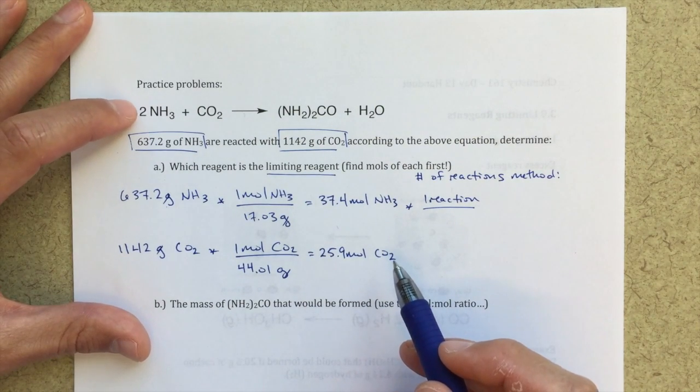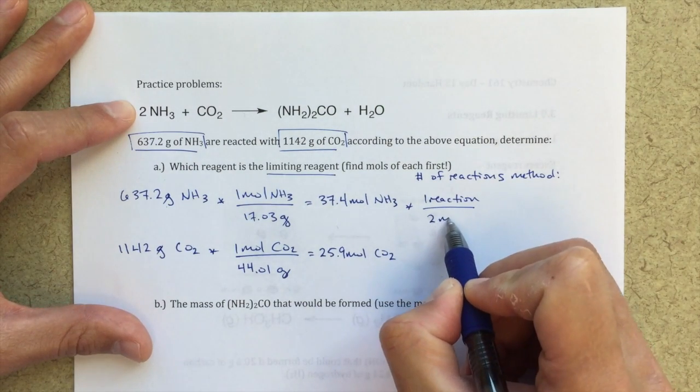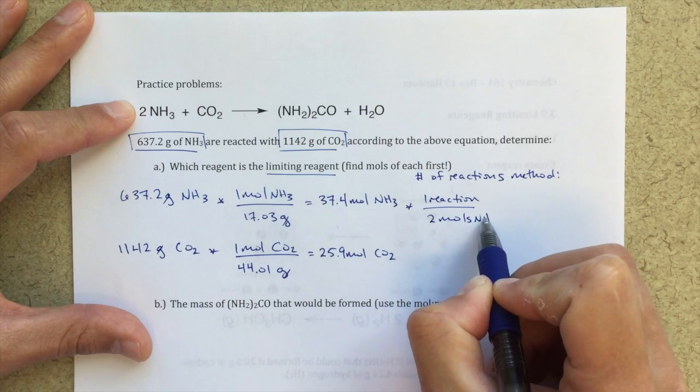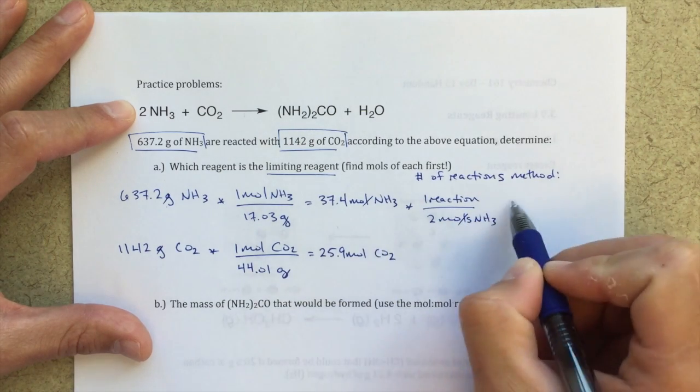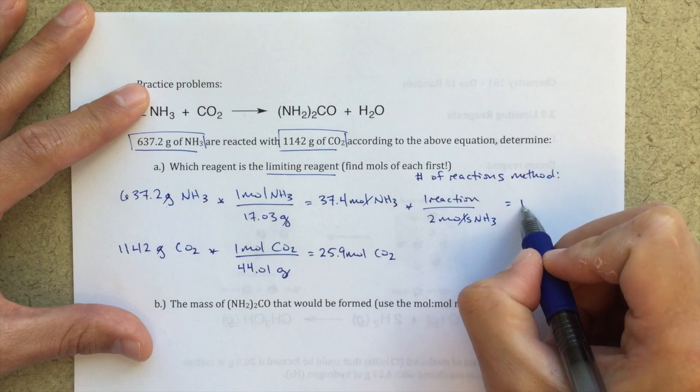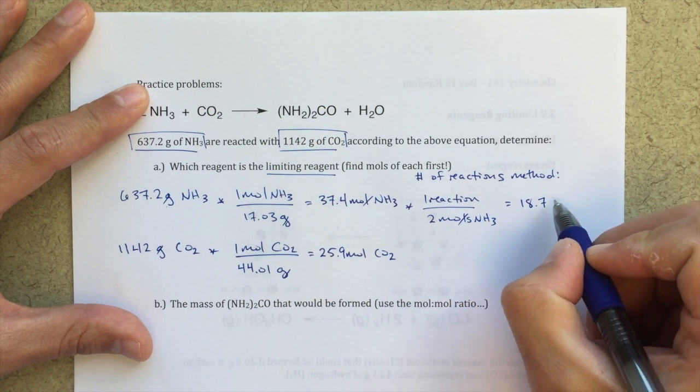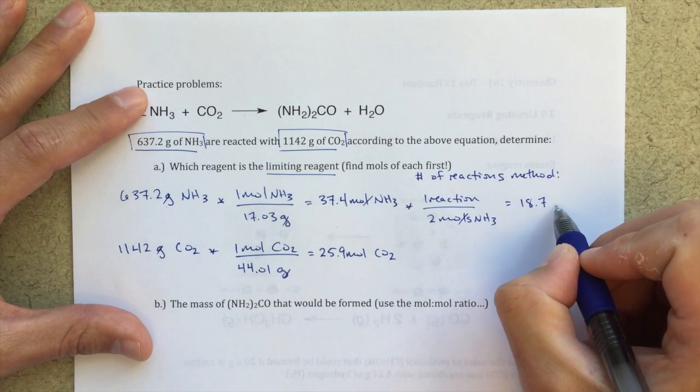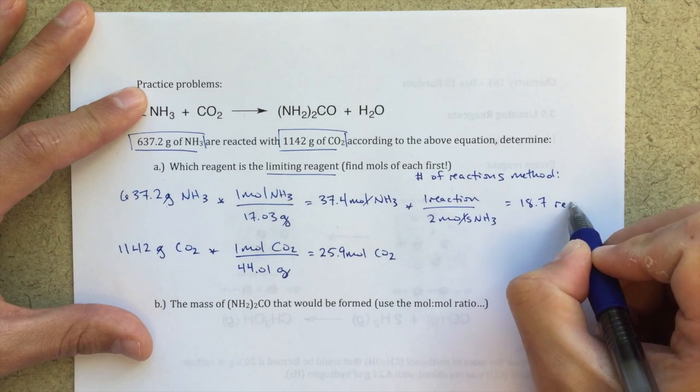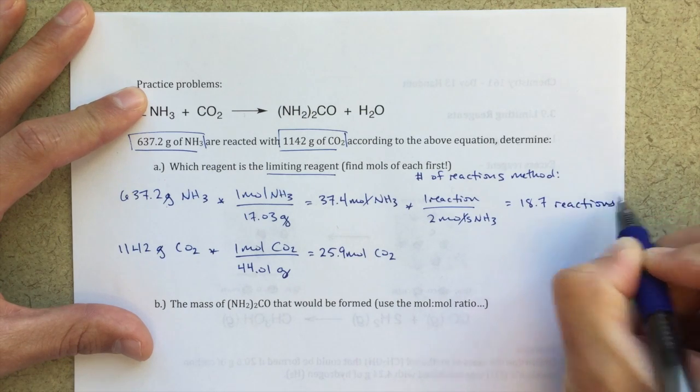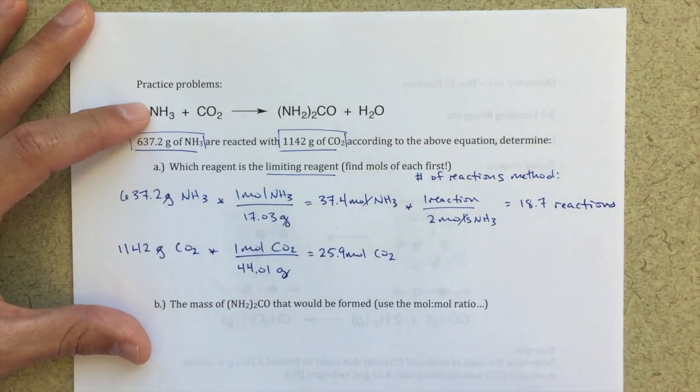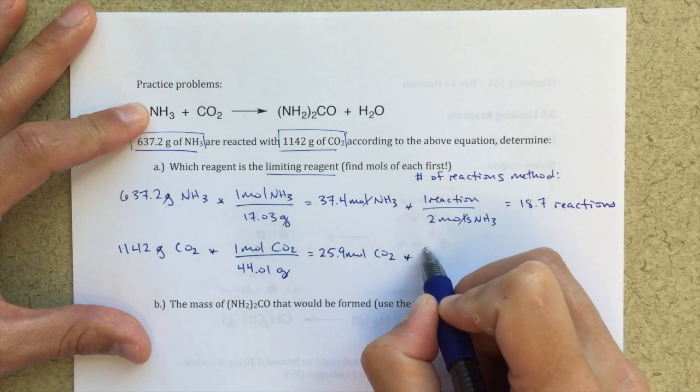How many moles of NH3 does it take to do one reaction? It takes two moles. My units of moles of NH3 will cancel out, and I will be able to figure out that, given these conditions, I can do 18.7 reactions. I can do this reaction 18.7 times. I'll do the same thing for CO2.